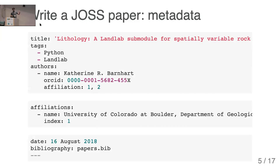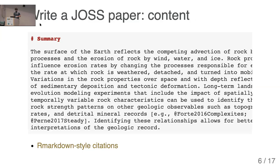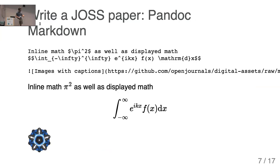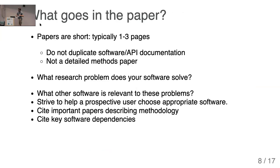You write the JOSS paper — it includes a little bit of metadata at the top of your Markdown file. I'm using Katie's recent publication as an example here, which was a Landlab module that referenced the Landlab repository. You have metadata and content. The paper uses Markdown-style citations with your BibTeX file. It uses Pandoc Markdown, so math, display equations, figures, and captions all work. These papers are relatively short — if you have mature software and have been following best practices, it probably takes an hour or two to put together.